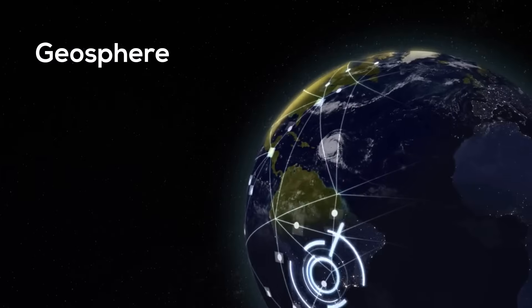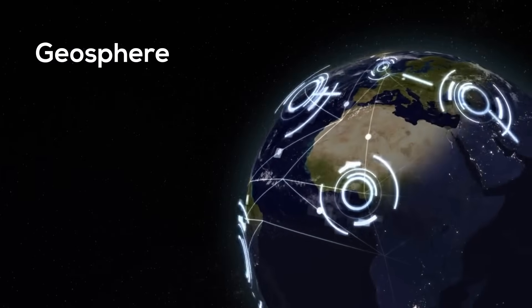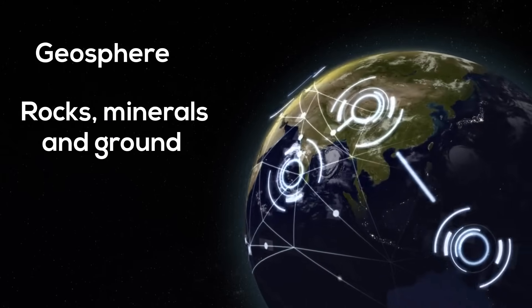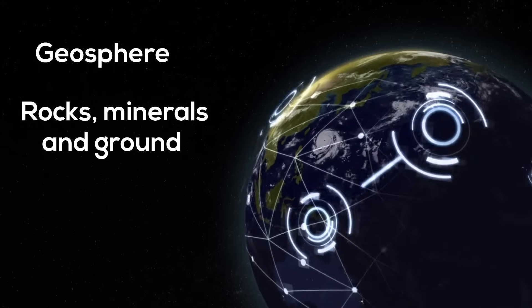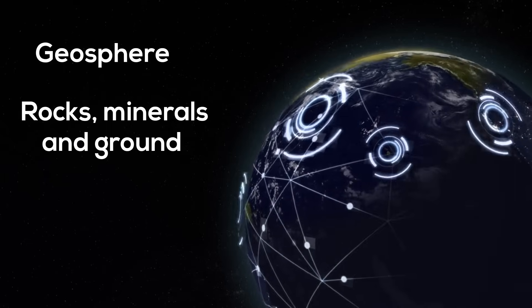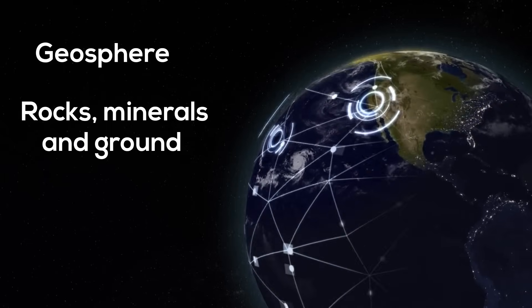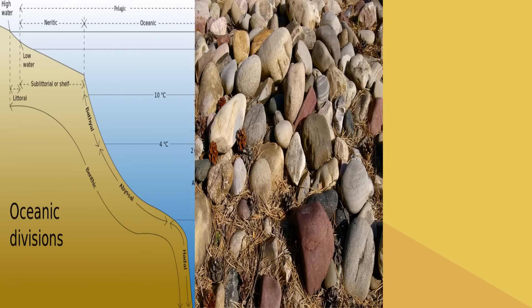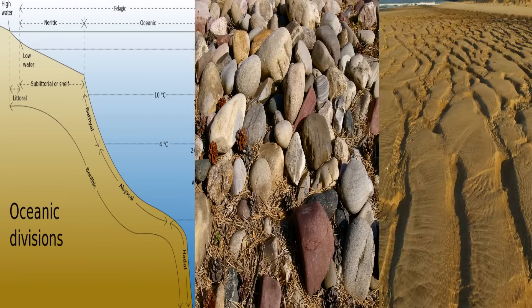Up first is the Geosphere. Since geo means the ground, the Geosphere describes all the rocks, minerals, and other parts of the ground that are found on and also inside the Earth. The Geosphere includes the inner core, outer core, crust, and mantle. So the Geosphere would include the ocean floor, all the rocks on the surface, the sand in the deserts, and inside the Earth.